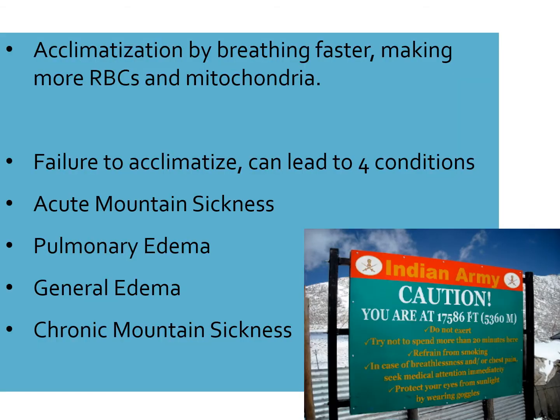Lowlanders going to a high altitude environment acclimatize by breathing faster, making more red blood cells, and producing more mitochondria within their cells. Failure to acclimatize as a lowlander moving to high altitude can lead to four separate conditions: acute mountain sickness, pulmonary edema, general edema, and chronic mountain sickness.